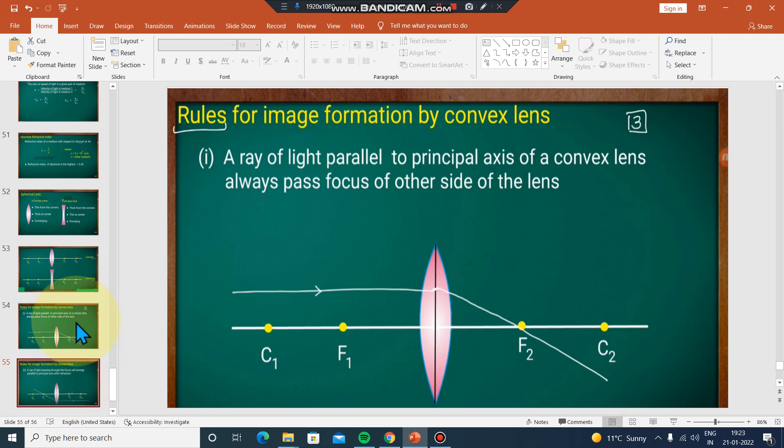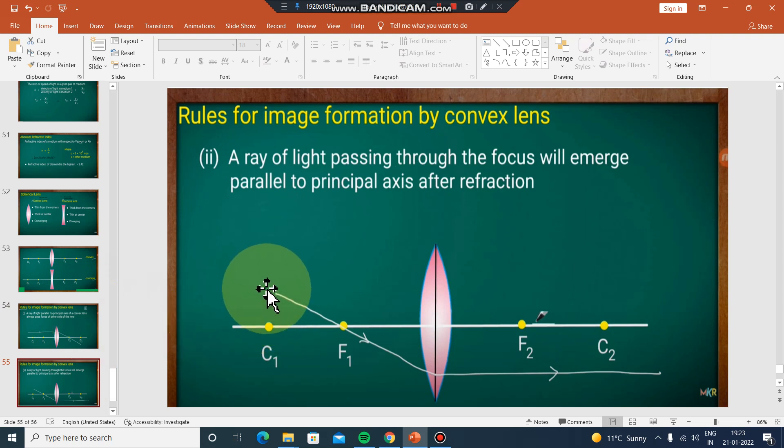Second rule: if a ray passes through the focus point of a convex lens, it will become parallel. So rays from the focus become parallel, just like in a concave mirror.